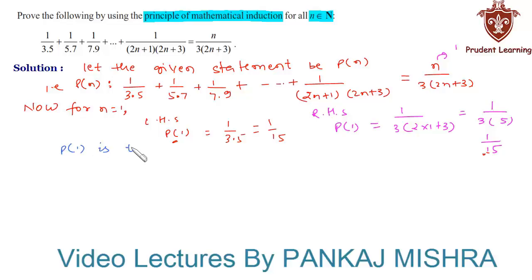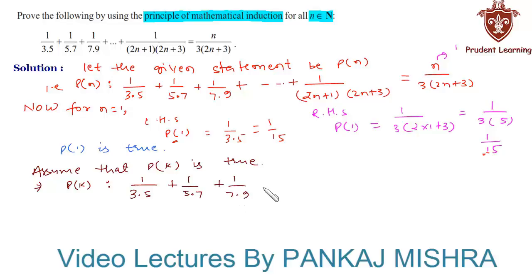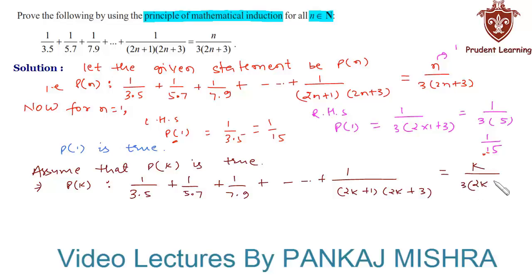In our second step, the assumption step, we assume that P(k) is true for some positive integer k. This means 1/(3×5) + 1/(5×7) + 1/(7×9) + ... + 1/((2k+1)(2k+3)) equals k divided by 3(2k+3). Let us call this equation 1.